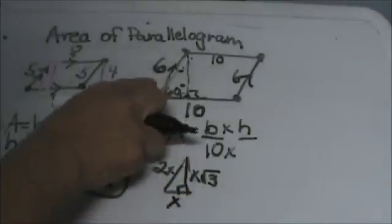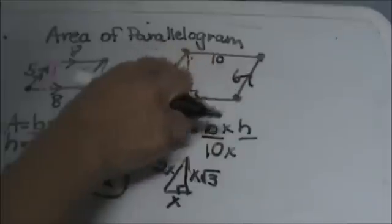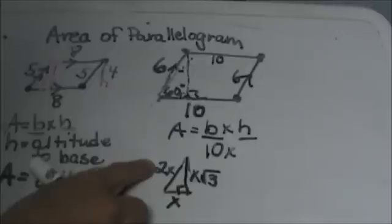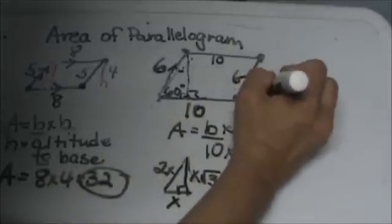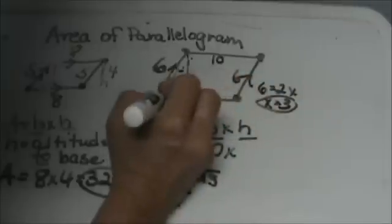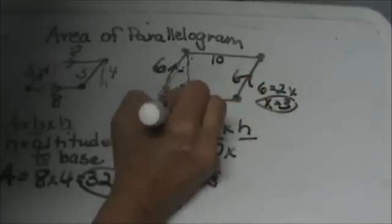So let's look up here. Looking at this right triangle, I have the hypotenuse which is equal to 2x. So 6 is equal to 2x, so x is equal to 3. So that means this portion of the base is equal to 3.